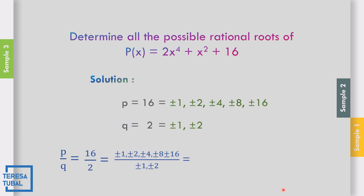Now let us divide p divided by q. Dividing by 1: 1 divided by 1 is positive-negative 1; 2 divided by 1 is positive-negative 2; 4 divided by 1 is positive-negative 4; 8 divided by 1 is positive-negative 8; 16 divided by 1 is positive-negative 16. Dividing by 2: 1 divided by 2 is positive-negative 1 half; 2 divided by 2 is 1 (already listed); 4 divided by 2 is 2 (already listed); 8 divided by 2 is 4; 16 divided by 2 is 8. So the possible rational roots are positive-negative 1, 2, 4, 8, 16, and positive-negative 1 half.